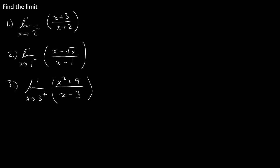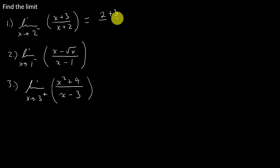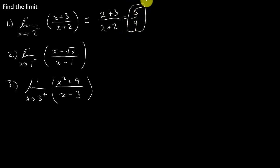In the first problem, we've got the limit of (x+3)/(x+2) as x approaches 2 from the left. We can do what we do with other limits — if we were doing the limit as x approaches 2, we can just plug this in. So that's going to be 2 plus 3 over 2 plus 2, which gives me 5 over 4. And there's my limit — it can be that easy.